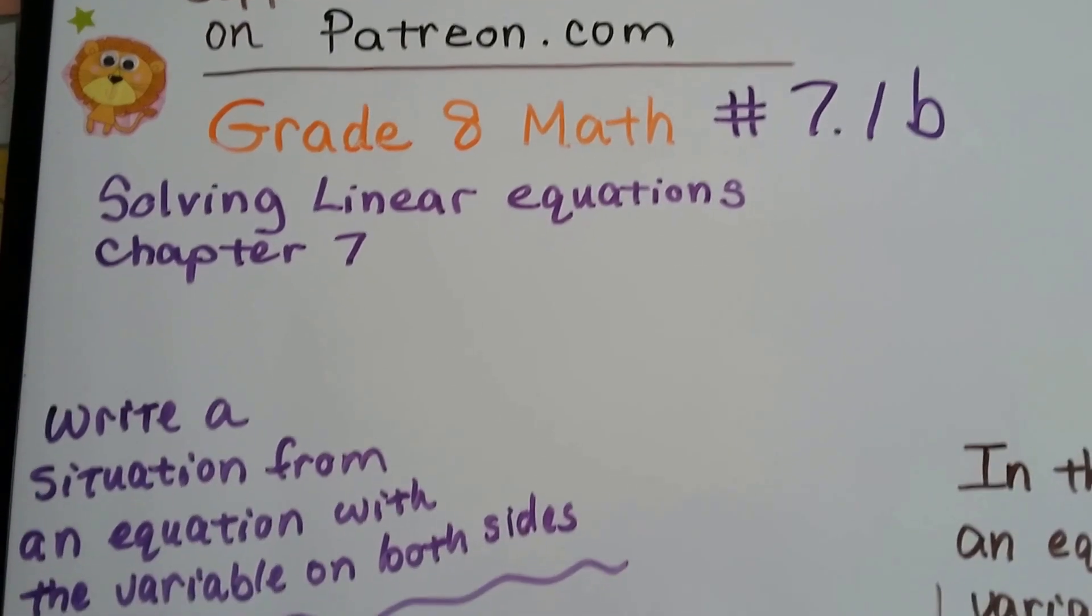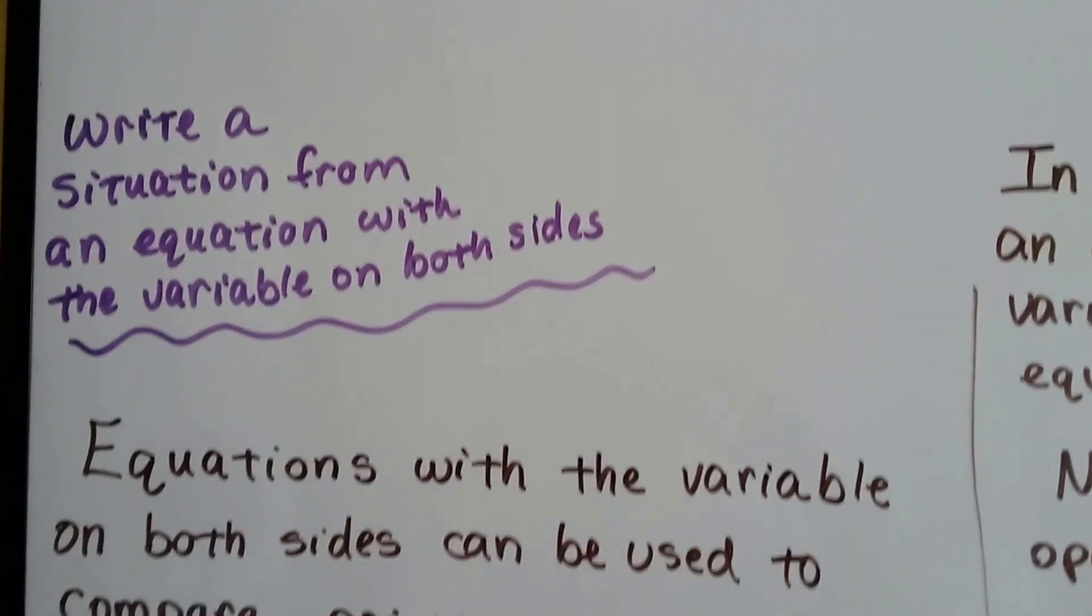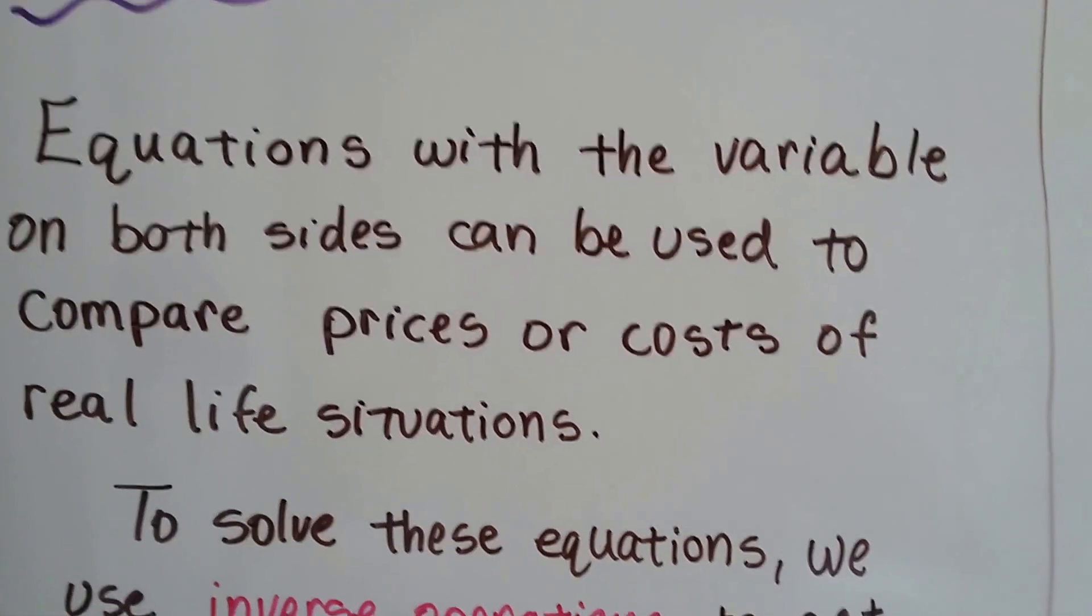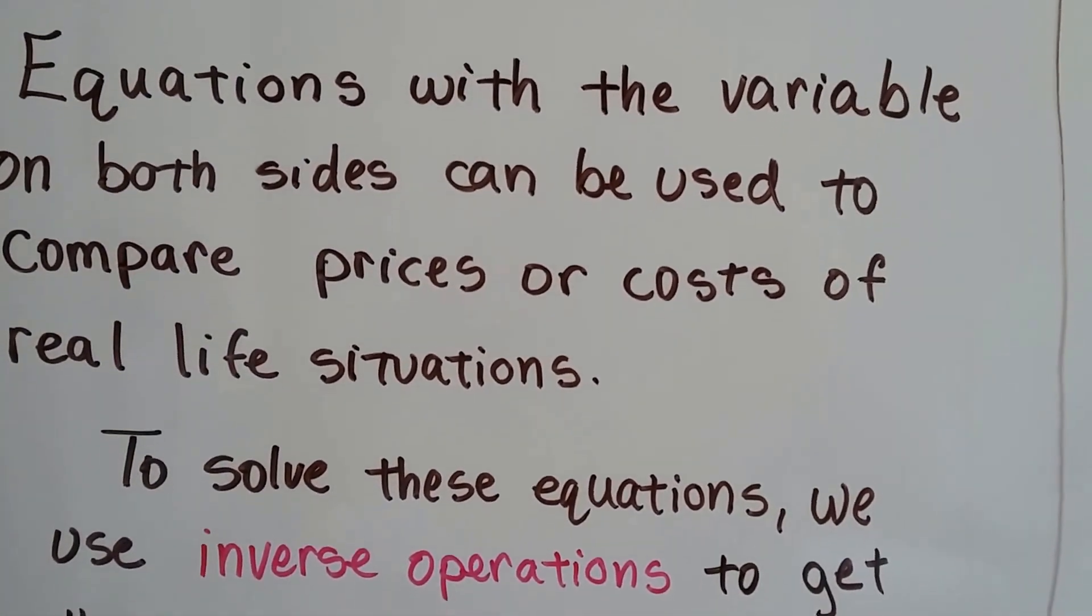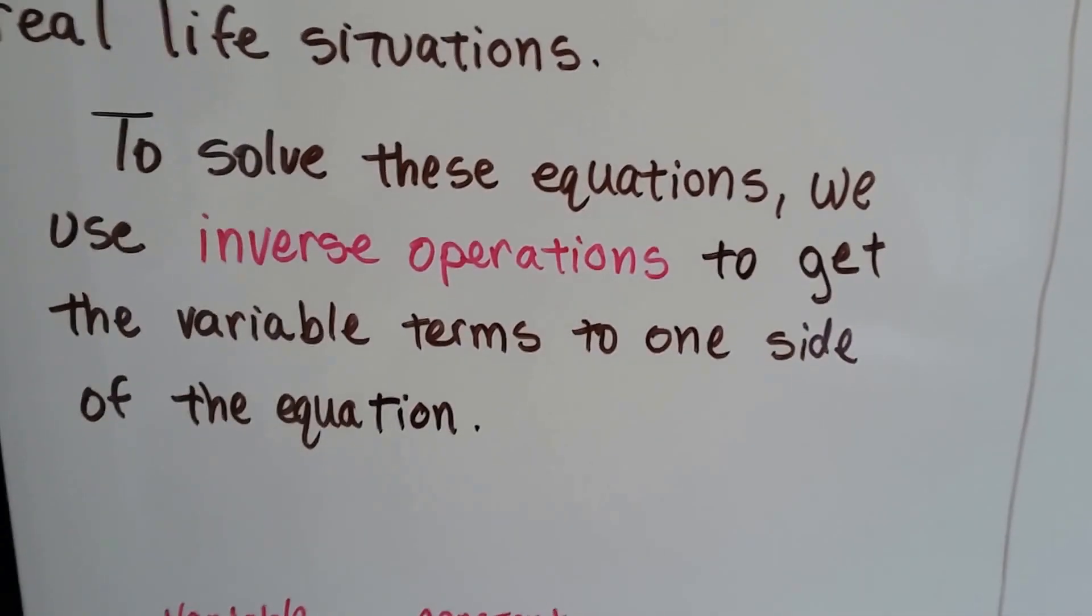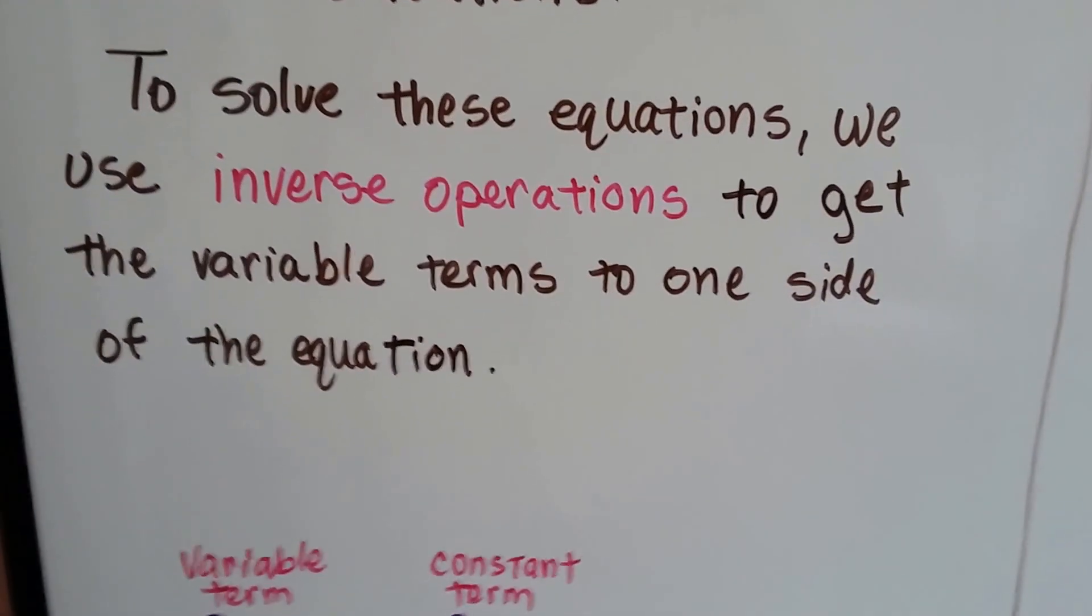Grade 8 math number 7.1b, write a situation from an equation with a variable on both sides. It's the opposite of what we did in the last video. Equations with a variable on both sides can be used to compare prices or costs of real-life situations. To solve these equations, we use inverse operations to get the variable terms to one side of the equation.